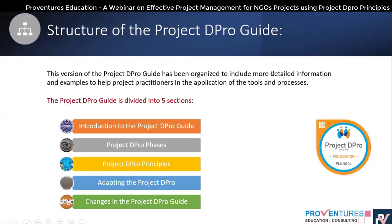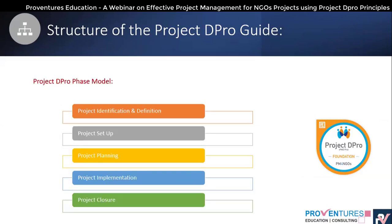The Project DePro guide is divided into five sections: an introduction to the Project DePro guide, the Project DePro phases, Project DePro principles, adapting to the Project DePro, and changes in the Project DePro guide.